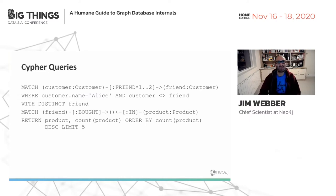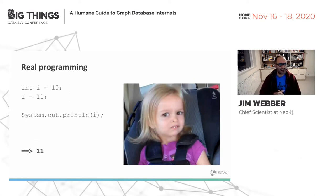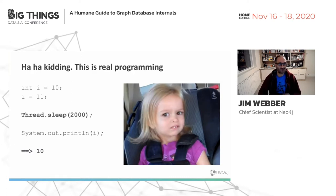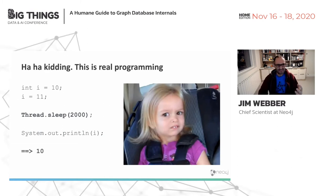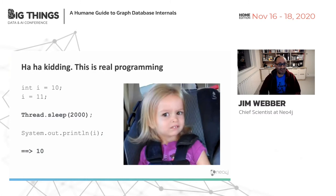That's all about graph databases — the humane part. That was just to lure you in. Now comes the tough bit. I'm going to tell you that programming is too easy. I have a creation and assignment: int i equals 10, then i equals 11. When I do system.out.println on i, I get 11, which is exactly what we'd expect. But in real programming with thread.sleep(2000) — a classic debugging technique — you might see 10, then wait, what? Did that just change? 11? 10? What's going on? This would be an awful way to program if we couldn't reason about the assignment of values to variables.